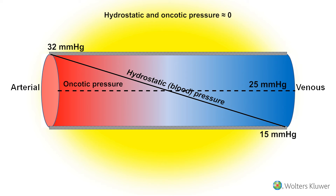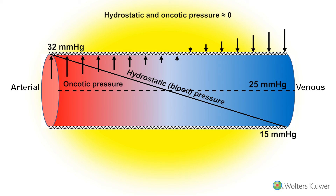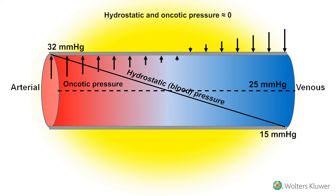The interaction of these pressures results in transmembrane flow, represented both in magnitude and direction by these arrows. On the arterial end, transmembrane flow is towards the interstitium, resulting in filtration.